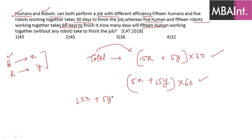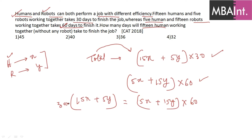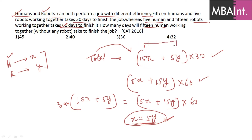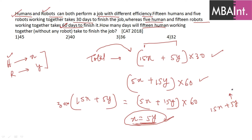Equating: (15x + 5y) × 30 = (5x + 15y) × 60. Solving this gives x = 5y. Now substituting back, the combined efficiency is 15x + 5y = 15x + x = 16x (since 5y = x). So total work = 16x × 30 = 480x.